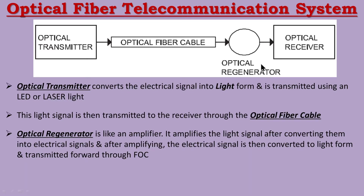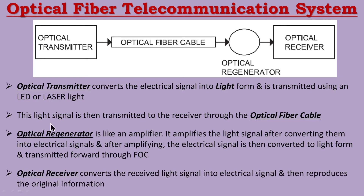The last stage is the optical receiver. The optical receiver converts the received light signal into an electrical signal and reproduces the original information. When it converts the light signal to an electrical signal, the original information — sound, picture, or computer data — is reproduced at the destination.